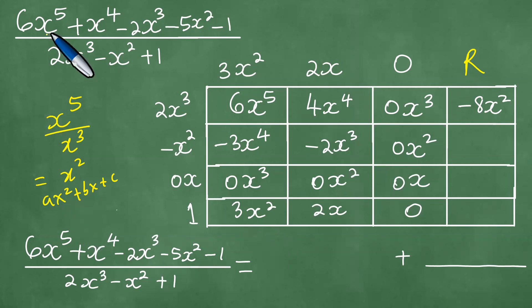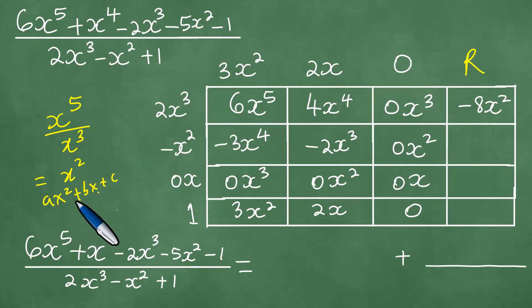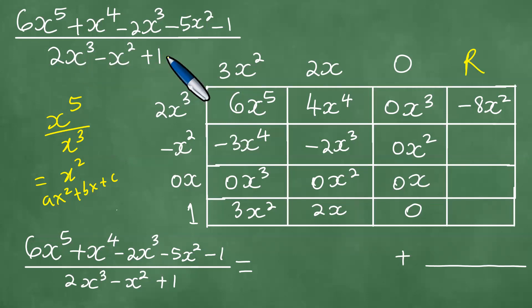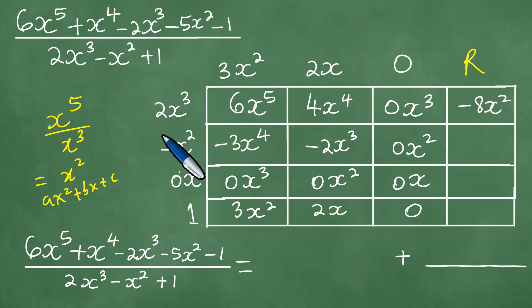If you divide x to the power 5 by x cubed, you subtract the exponents: 5 minus 3 gives 2, so it's x squared. The quotient is of the form ax squared plus bx plus c — a quadratic — and that's why we need three columns. For the side rows, the divisor is 2x cubed, so we must list all powers down to the constant: 2x cubed, minus x squared, 0x, and then 1.